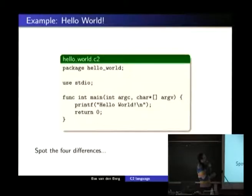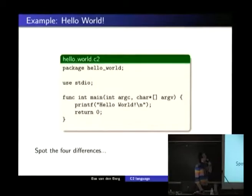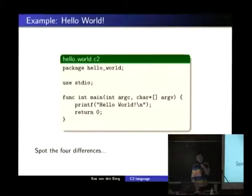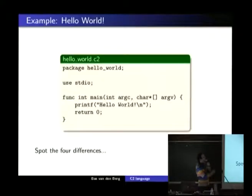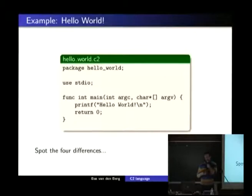Every file in C2 starts with the declaration 'package'. Every file belongs to a package, and a package can consist of multiple files if they just have the same package statement. The second difference is we don't have includes — they're allowed but they're not used. Instead we have the 'use' statement that does the same thing, but it doesn't copy-paste the entire stdio.h into your file. So when the C2 compiler compiles it, it reads like eight lines, not 800 lines.